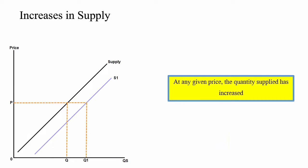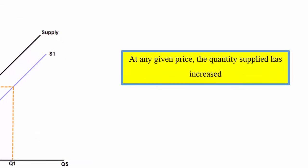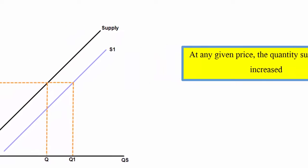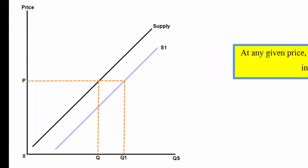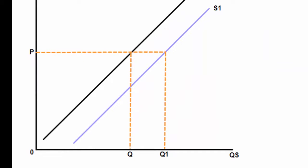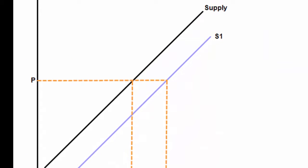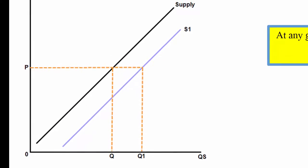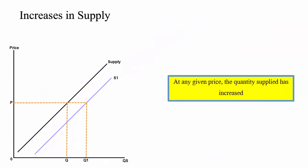Each time the supply curve shifts to the right, if we only draw a supply curve and no demand curve, we say that at any given price there will be a greater quantity supplied. You can take any price along that y-axis, for example P, and where it hits the original supply curve there's quantity Q produced, but if you shift the supply curve to the right at that price there will be a greater quantity Q1 produced. That's how we should analyze what happens when supply increases.